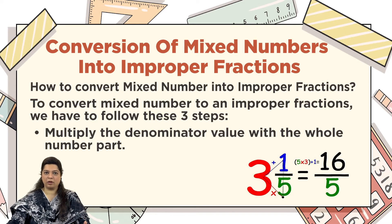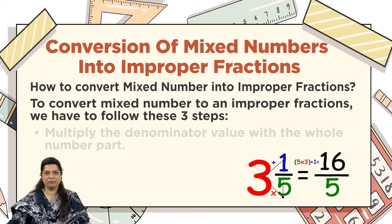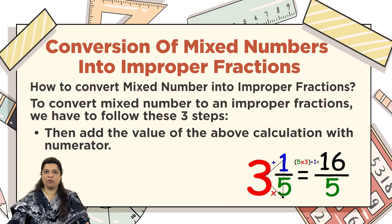In this example, the whole number part is 3, the numerator is 1, and the denominator is 5 — color coded so you can easily follow along. Step 1: multiply the denominator by the whole number part, so 5 multiplied by 3 equals 15. Step 2: add the result of that calculation to the numerator, so 15 plus 1 equals 16. This gives you a new numerator of 16.